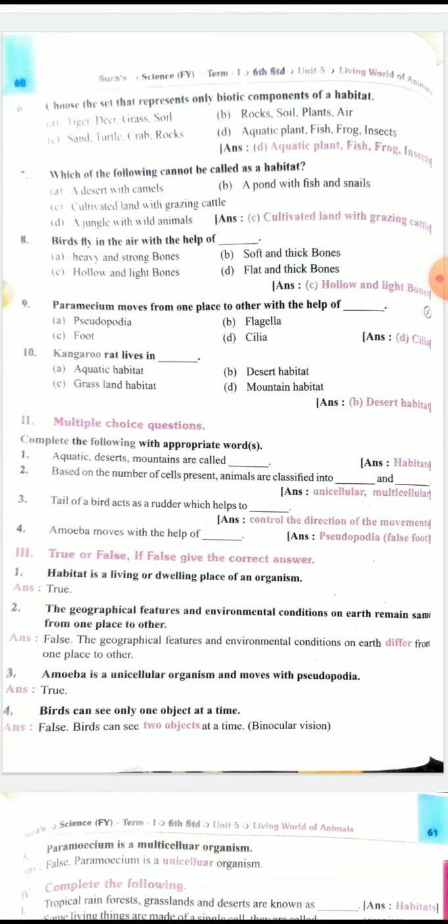Next two: Multiple choice questions. First one: Aquatic deserts, mountains are called habitats. Second one: Based on number of cells present, animals are classified into unicellular and multicellular. Third one: Tail of a bird acts as a rudder which helps to control the direction of the movement.